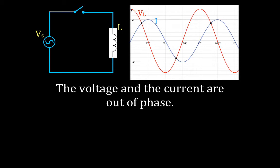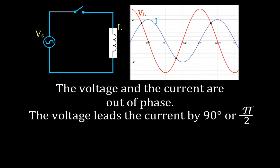The voltage always leads the current. The peak voltage always occurs before the peak current, and the distance between the peak voltage and the peak current is pi over two radians, or 90 degrees. So we want to state that the voltage leads the current by 90 degrees.